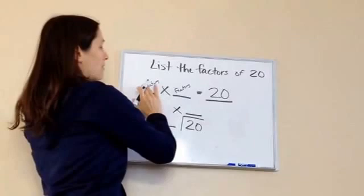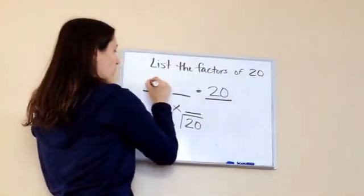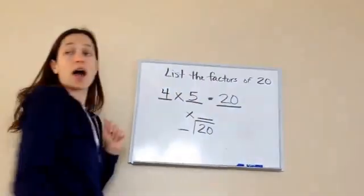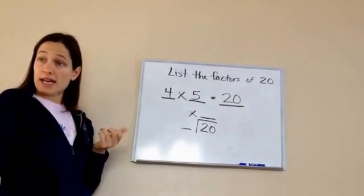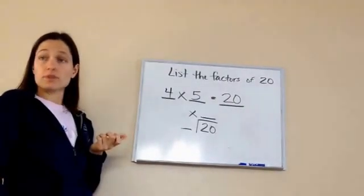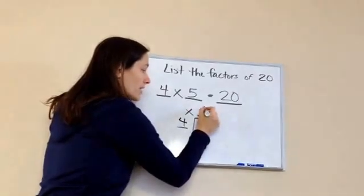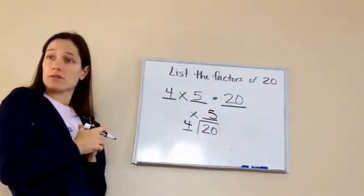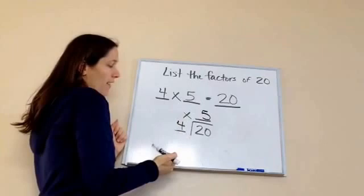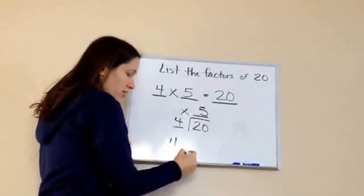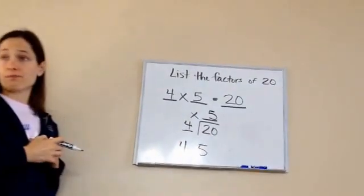For example, I'm gonna give you one just starting off. Four times five, that equals 20? Yeah. Okay, so four times what? Five. Okay, so so far we've discovered that four is a factor and five is a factor.